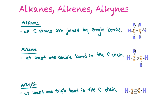In alkanes, all the carbon atoms are joined by single bonds — so this would be ethane. Alkenes have at least one double bond in the carbon chain, so this one would be ethene. And then alkynes have at least one triple bond in the carbon chain — so this is an example of ethyne.